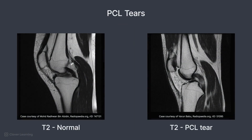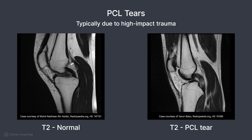Posterior cruciate ligament, or PCL tears, are less common, typically resulting from high-impact trauma like dashboard injuries in car accidents or hyperextension. A normal PCL appears as a low-signal curved structure in the intercondylar notch on sagittal images. Tears show high signal discontinuity or thickening on T2-weighted images. On the first image, you can see the intact PCL with uniform low signal. On the second image, you can see a partial tear with increased signal and partial disruption of the ligament fibers.